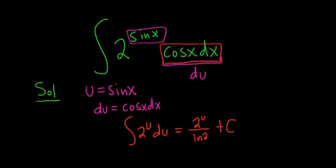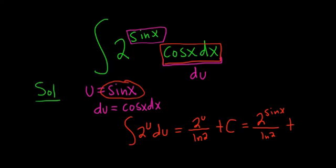The last thing to do is replace u with what it actually is. So in this case, u is sine x. So this is 2 to the sine x over ln 2, and then we still have our constant, so plus C. Hope that made sense.